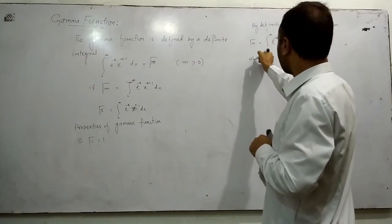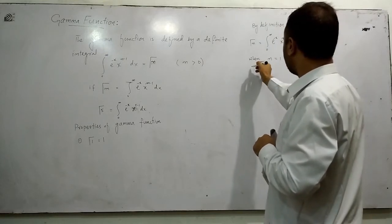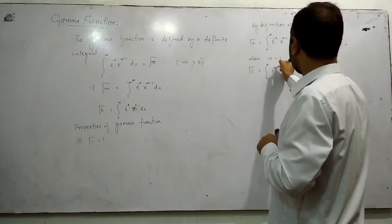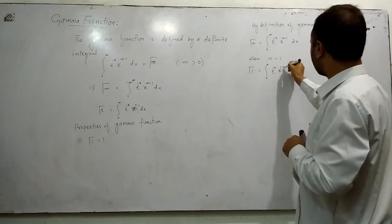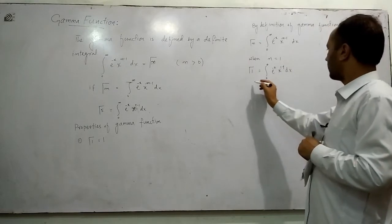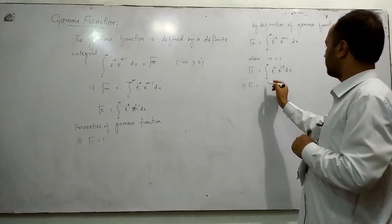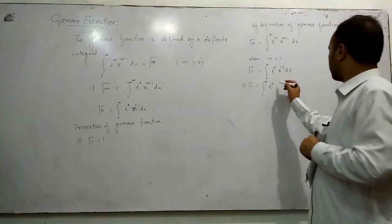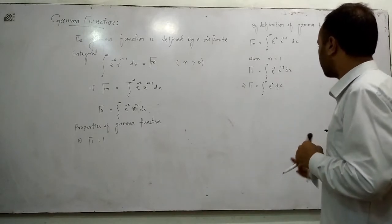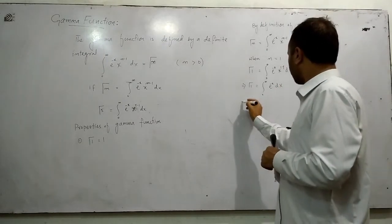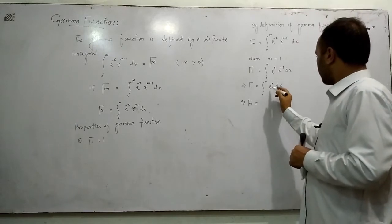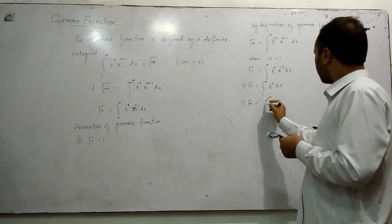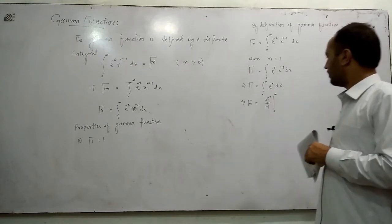By substituting n equal to 1, this becomes gamma(1) equals the integral from 0 to infinity of e to the power minus x, times x to the power 1 minus 1, dx. This implies gamma(1) equals the integral from 0 to infinity of e to the power minus x times x to the power 0, which is 1, so we write e to the power minus x dx. Then, integrating the right-hand side, integrating e to the power minus x gives e to the power minus x divided by minus 1, with limits from 0 to infinity.